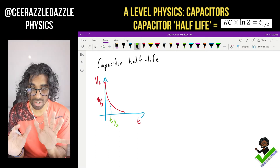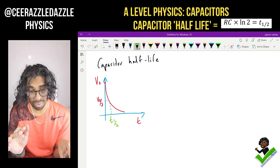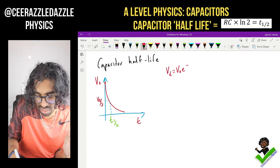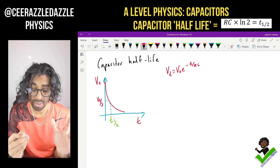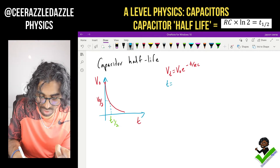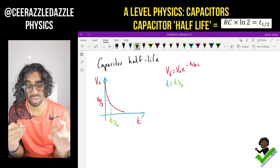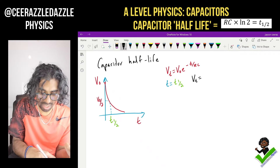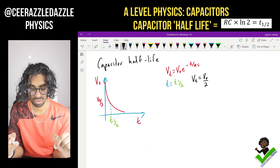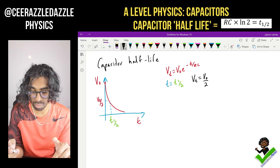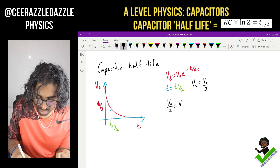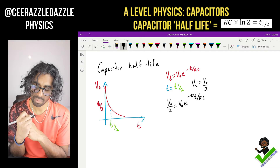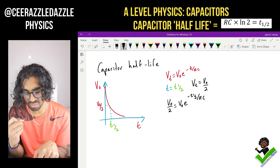So here's our capacitor half-life graph again. We know initially the voltage is V naught, then after the half-life the voltage drops down to V naught over 2, and we call this the half-life t subscript half. Now I'm going to prove a nice formula based off this idea. We know that the voltage at a certain time equals V₀ e to the minus t over RC. When the time is exactly the half-life, the voltage will be equal to V naught over 2. So we substitute: V naught over 2 equals V naught e to the minus t½ over RC.